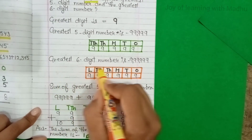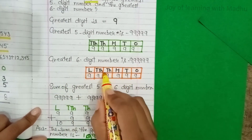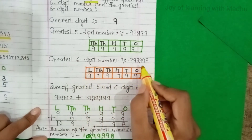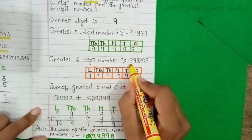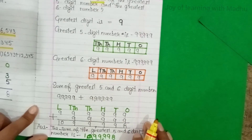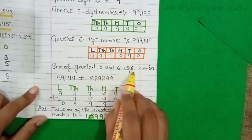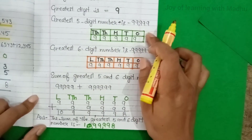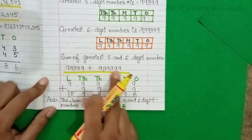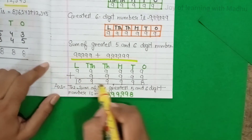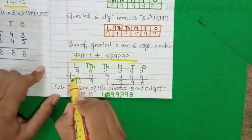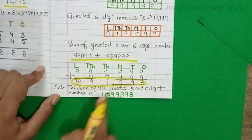ऐसे ही 6-digit greatest number के लिए 6 boxes बनाएंगे, place values लिखेंगे, सभी में 9 लिखेंगे। The greatest 6-digit number is 9,99,999. अब इन दोनों का sum निकालने के लिए दोनों को add करेंगे — यह हमने add कर लिया है।